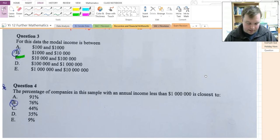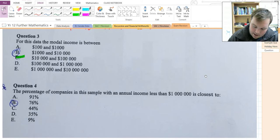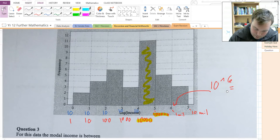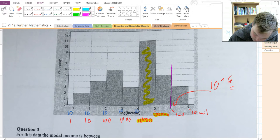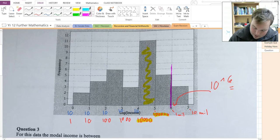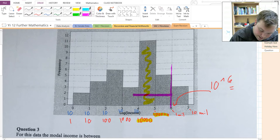What percentage of companies in this sample have an annual income of less than a million? So, the million mark is here, and we're looking for the percentage of companies that have less than a million.